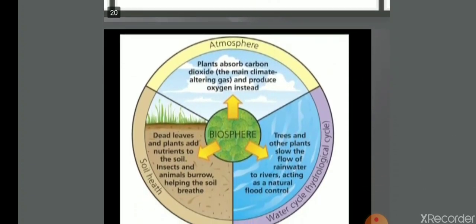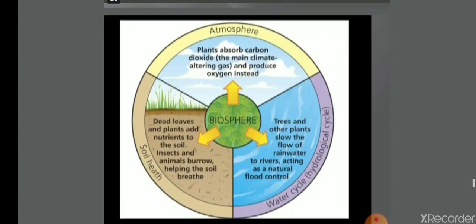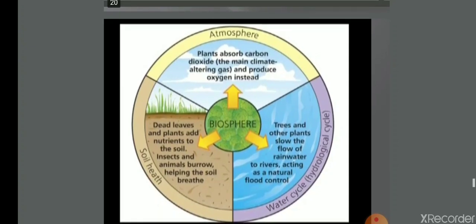Plants absorb carbon dioxide, the main climate-altering gas, and produce oxygen instead. Dead leaves and plants add nutrients to the soil. Insects and animals burrow, helping the soil breathe. Trees and other plants slow the flow of rainwater in rivers, acting as natural flood control. Thus, biosphere is sphere of life.